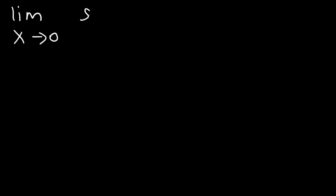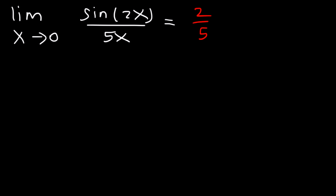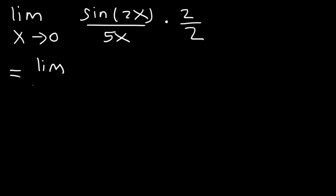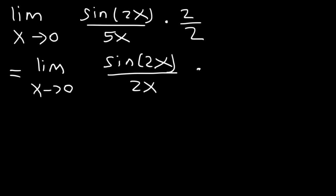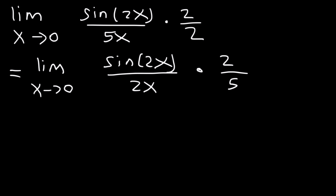Let's try this problem: what is the limit as x approaches 0 of sine 2x divided by 5x? The answer is going to be 2 divided by 5. Now let's show our work. We need to multiply the top and the bottom by 2 over 2, switching the 2 and the 5 to rewrite it as the limit as x approaches 0 of sine 2x divided by 2x, times 2 over 5. Since 5 times 2 and 2 times 5 both equal 10, the value is still the same.